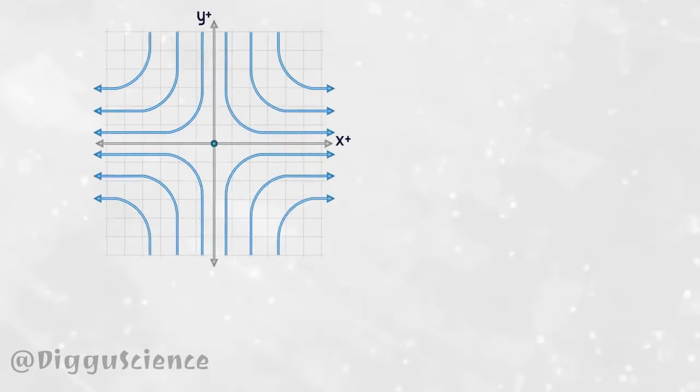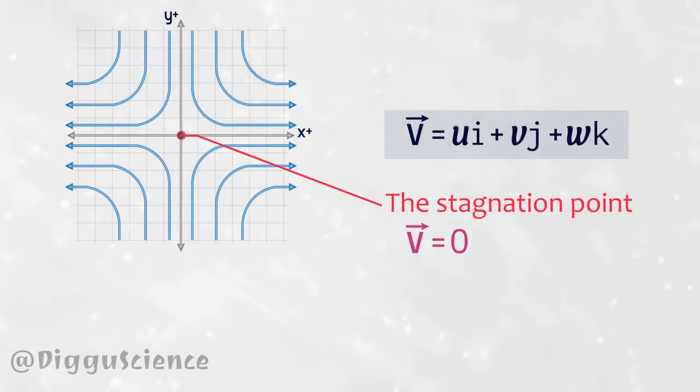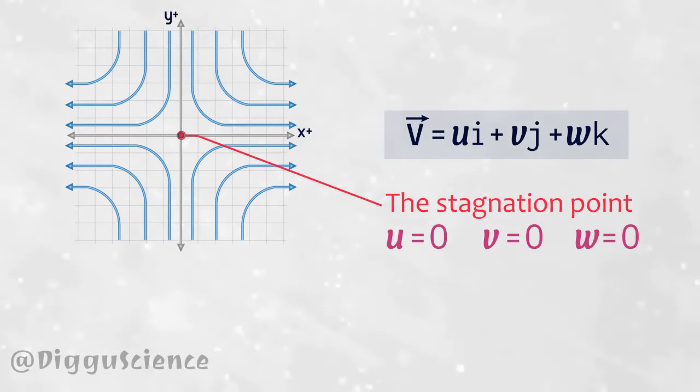Because fluid velocity can be written as a vector v equal to u i hat plus v j hat plus w k hat, then at the stagnation point, vector v is equal to 0. Or u i hat plus v j hat plus w k hat is equal to 0. Thus, u is equal to 0, v is equal to 0, and w is equal to 0. This is the condition at the stagnation point.